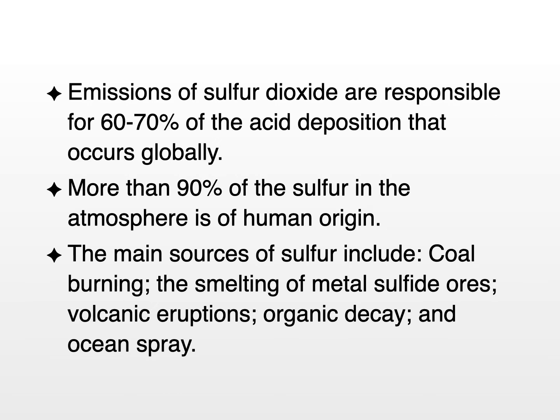Emissions of sulfur dioxide are responsible for 60 to 70% of the acid deposition that occurs on our planet, and more than 90% of this sulfur in the atmosphere is of human origin. The major human sources of sulfur include coal burning and smelting of metal sulfide ores. Natural sources include volcanic eruptions, organic decay, and ocean spray.